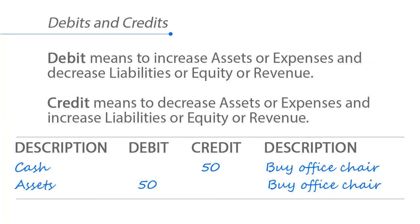A debit means to increase assets or expenses, and decrease liabilities, equity, or revenue — those are the five major accounting classes we discussed. A credit means to decrease assets or expenses, and increase liabilities, equity, or revenue.